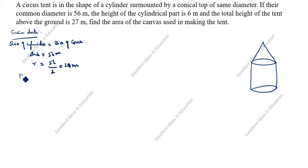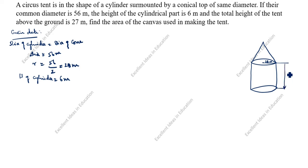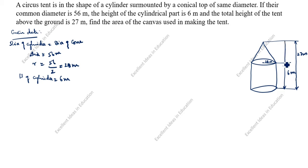The height of the cylindrical part is 6 meters, and the radius is 28 meters. The total height of the tent above the ground is given as 27 meters. So the height of the cone is 27 minus 6, which equals 21 meters.